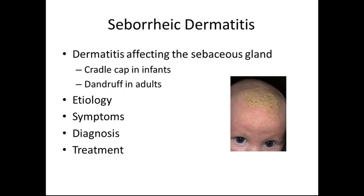Seborrheic dermatitis is the dermatitis affecting the sebaceous glands. We often call this cradle cap in infants and dandruff in adults. The etiology is unknown. Symptoms include skin redness covered with greasy-looking yellowish scales, or the eyebrows or eyelashes have dry, dirty white scales to them.